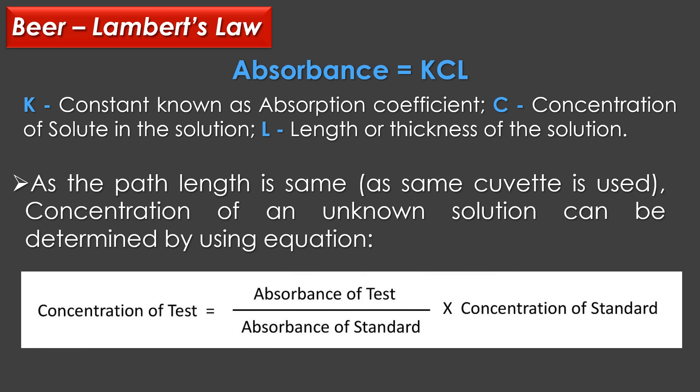When combining Beer-Lambert's law, absorbance A = KCL, where K is a constant known as the absorption coefficient, C is the concentration of the solute in the solution, and L is the length or thickness of the solution. As the same cuvette is used, the concentration of an unknown solution can be determined using the equation: concentration of test = (absorbance of test / absorbance of standard) × concentration of standard.